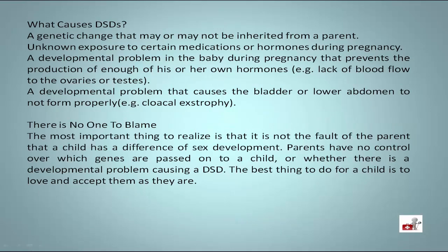What causes DSDs? A genetic change that may or may not be inherited from a parent. Unknown exposure to certain medications or hormones during pregnancy. A developmental problem in the baby during pregnancy that prevents the production of enough of his or her own hormones, such as lack of blood flow to the ovaries or testes. A developmental problem that causes the bladder or lower abdomen to not form properly, for example cloacal extrophy.